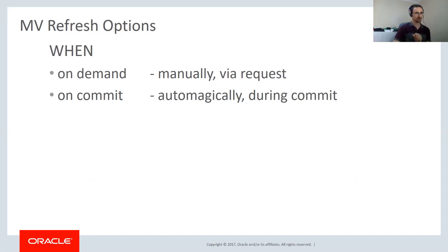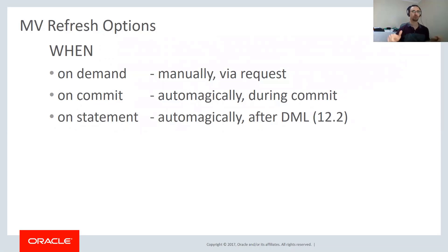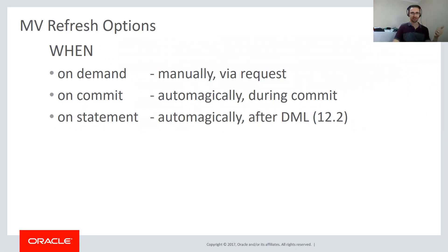There's also on statement refreshing, introduced in 12.2. This is automatic — it happens after every single DML statement: every insert, update, or delete. You don't even need to commit for the change to be reflected. So if you roll back that insert, it will be undone and taken back out of the materialized view. There are a lot of restrictions around this — mostly you can just use it to join tables — but it's worth being aware that it exists.